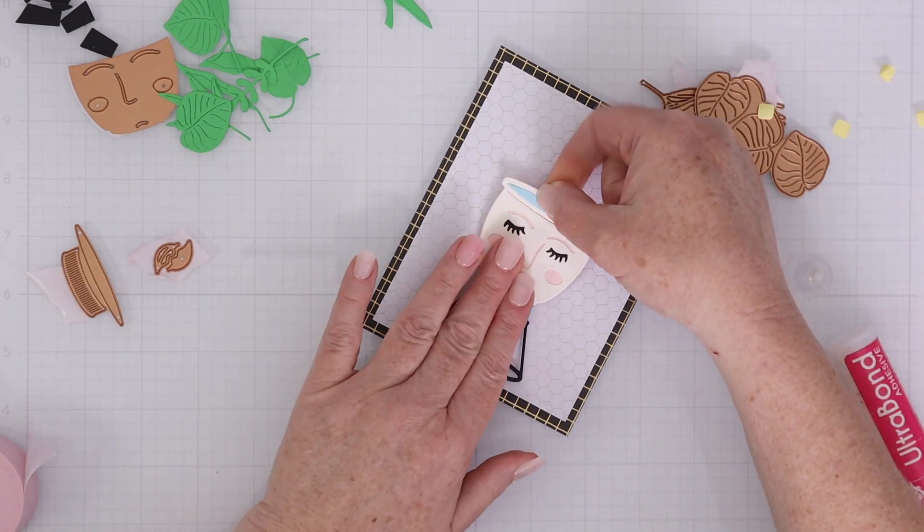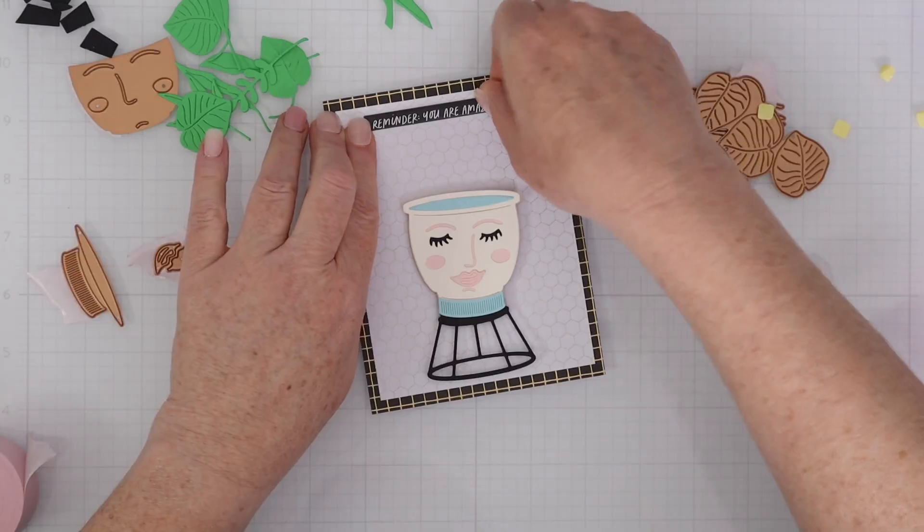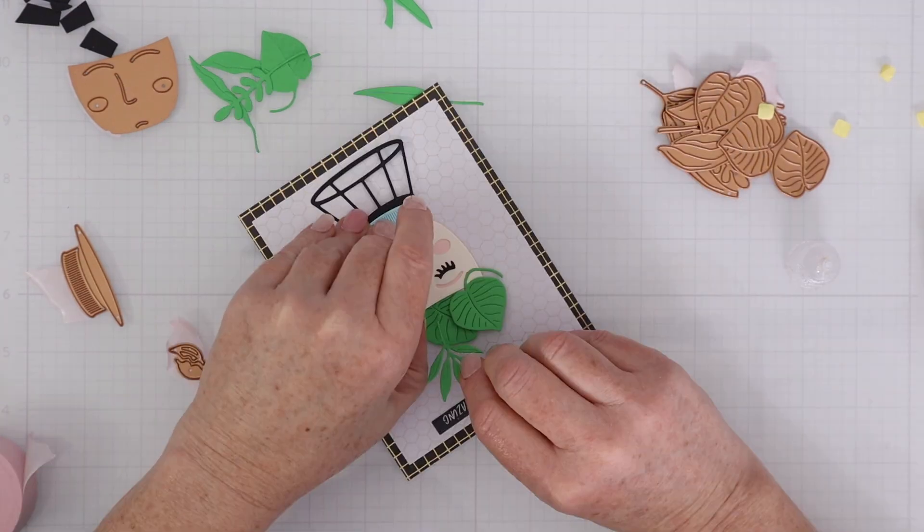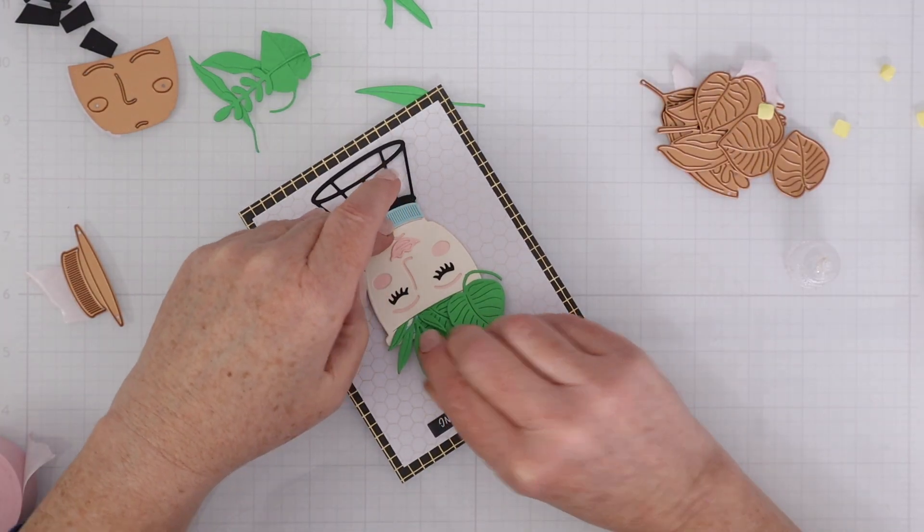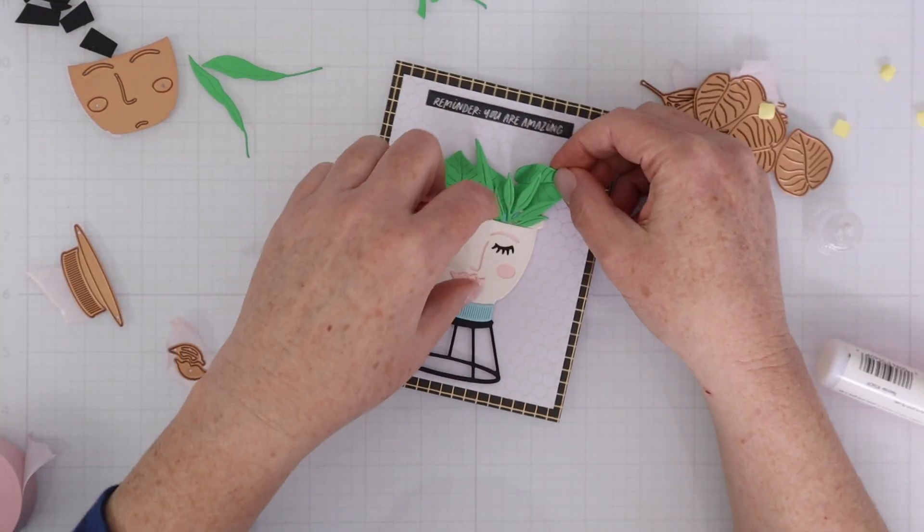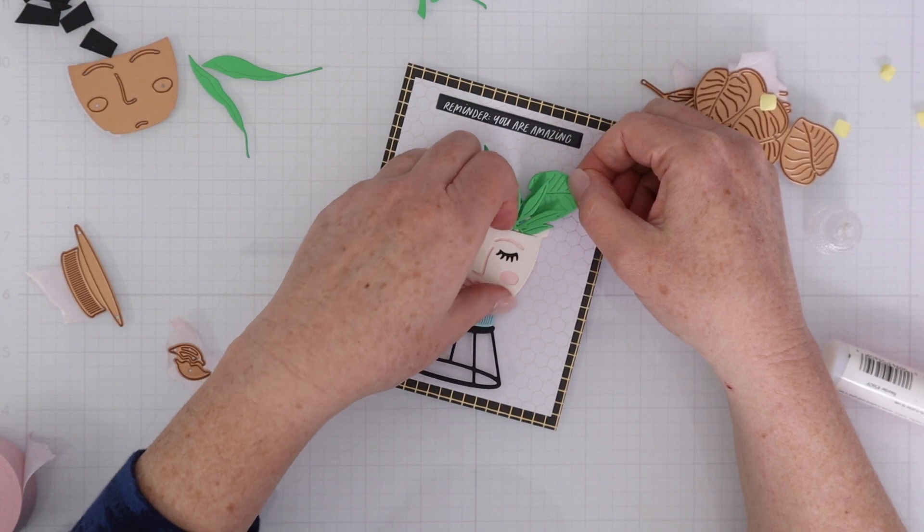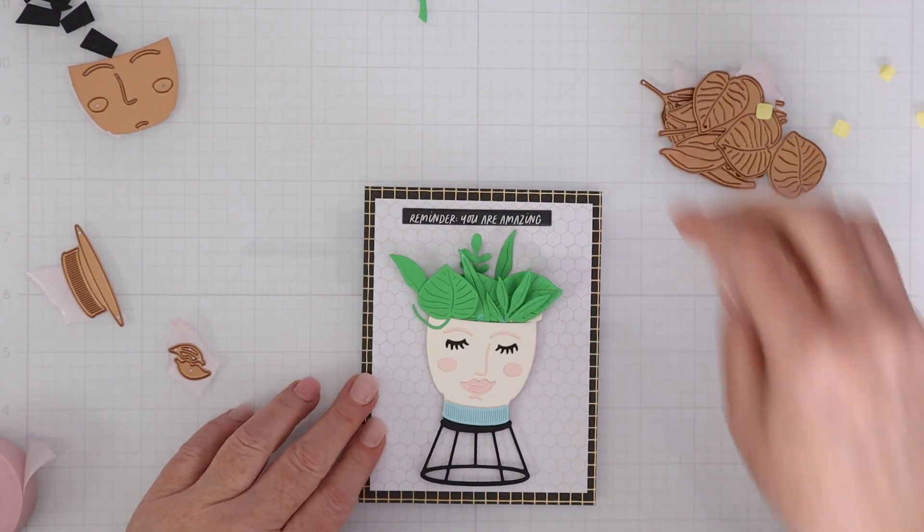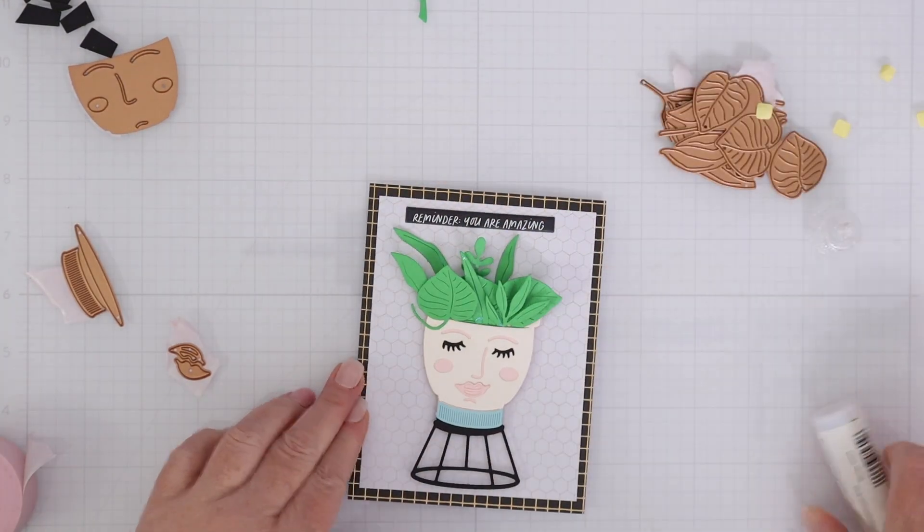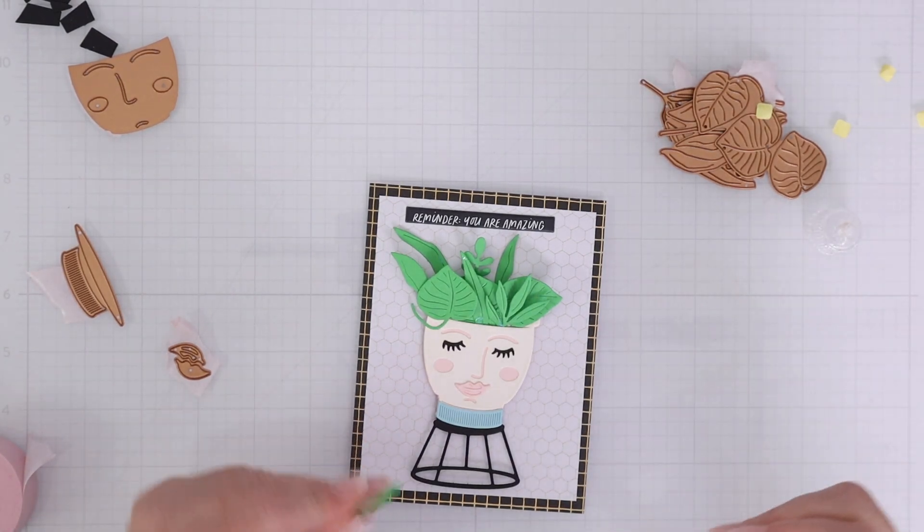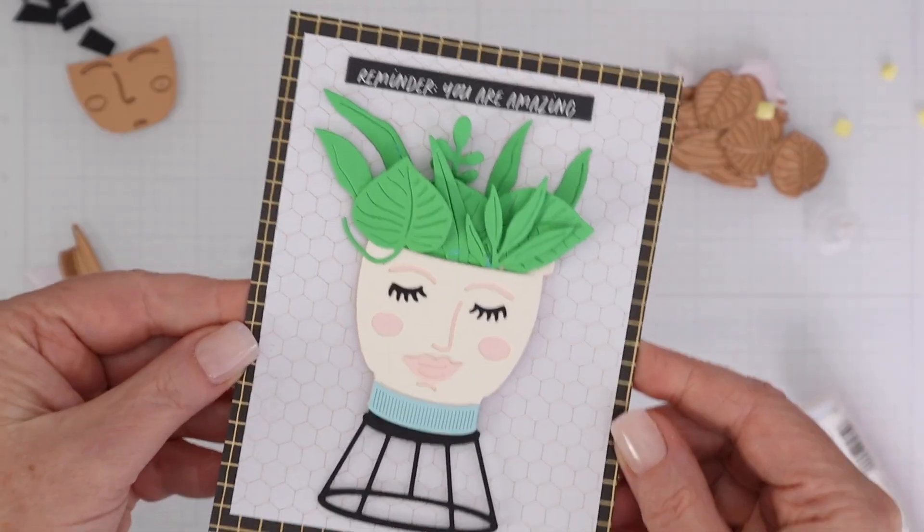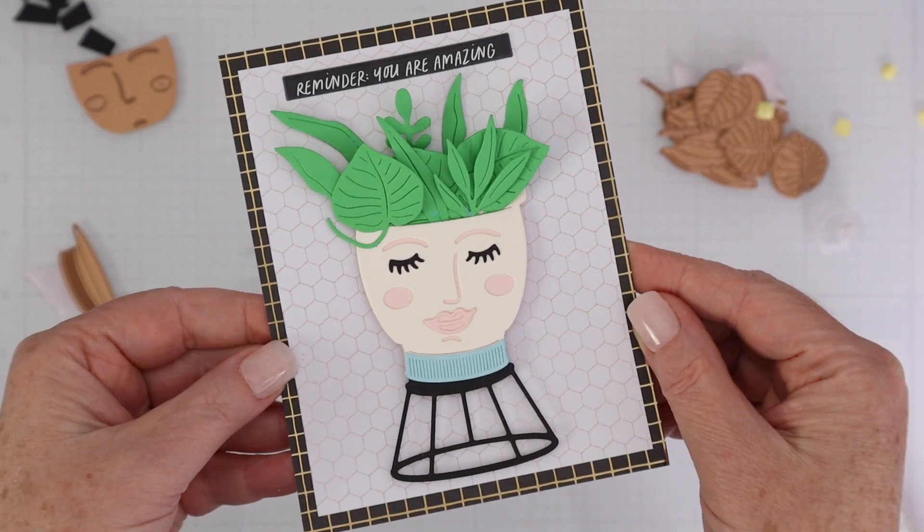Now you could cut these in all different colors. You could make them look like rainbow hair or anything else. I decided to cut them all out in green and I'm going to fill the top of that planter with all of those green leaves. And then the puffy sentiment that I chose was, remember you are amazing. Because this is kind of a unique, amazing looking face here and I just think it would be really nice to send somebody just to remind them how amazing you think that they are. So again, I'm just using a little bit of liquid glue behind these leaves and tucking them in. And the reason I can do that is because I popped up the planter itself.